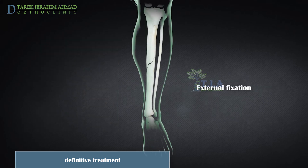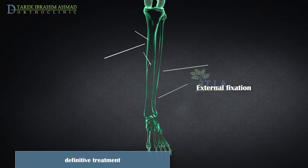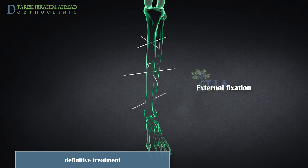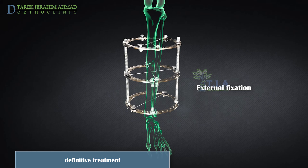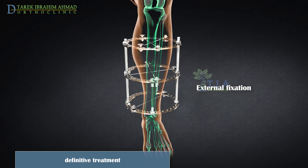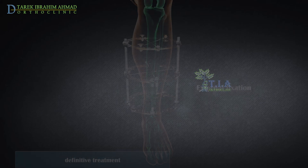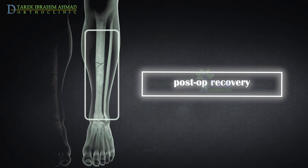For polytrauma patients or patients with open fractures with soft tissue defects or contamination, external fixation is used. In this type of operation, metal pins or screws are placed into the bone above and below the fracture site. The pins and screws are attached to a frame outside the skin — this stabilizing frame holds the bones in the proper position so they can heal.